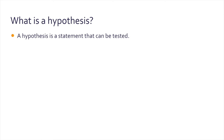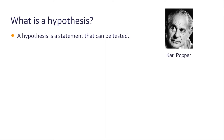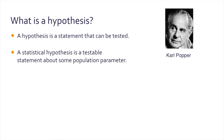The part that says it can be tested adheres to one of the main principles of science, as outlined by Karl Popper, which is the principle of falsifiability. In statistics, we are interested in a more specific type of hypothesis called the statistical hypothesis, which is a testable statement about some population parameter.